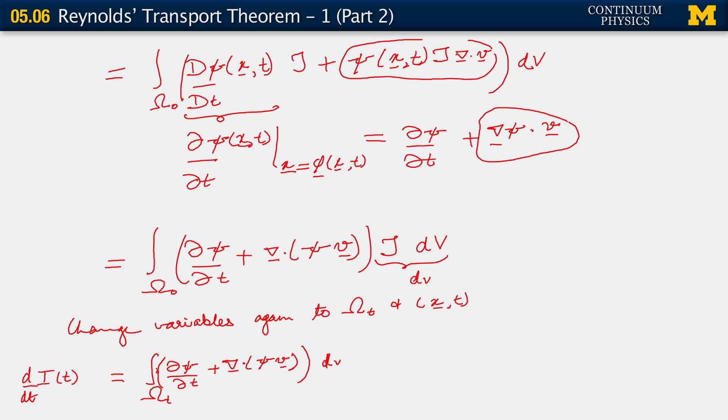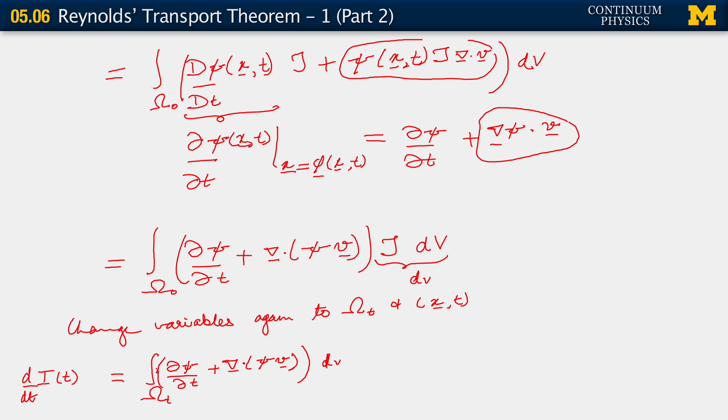Also observe that in this final step, we have rewritten the integral, as it was presented to us originally, as an integral over the current configuration, over the spatial configuration. So this trick of changing variables, pulling things back into the reference configuration, carrying out our derivatives there, and then, so to speak, pushing things forward, is a very common one in continuum mechanics, and it's something that we will use repeatedly.